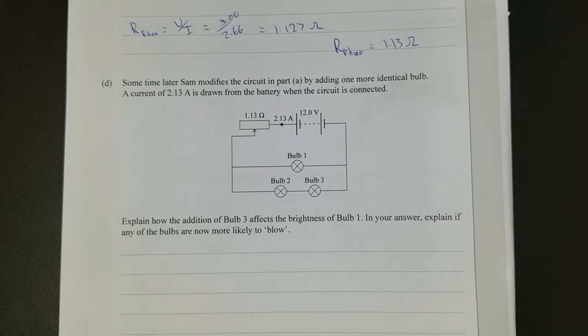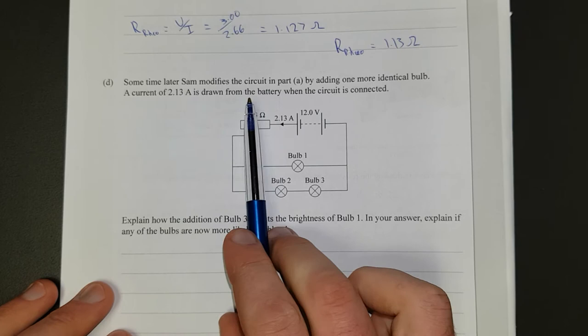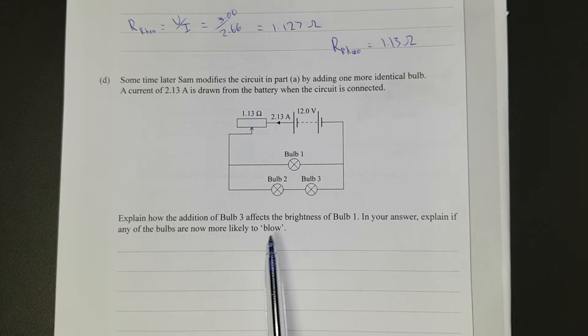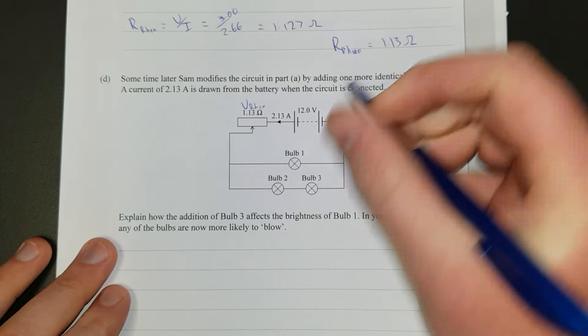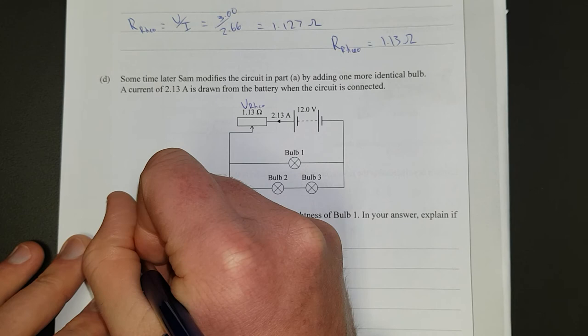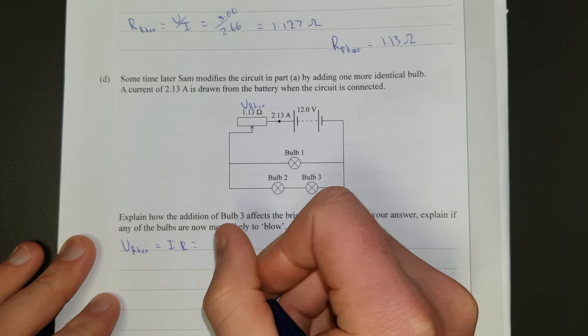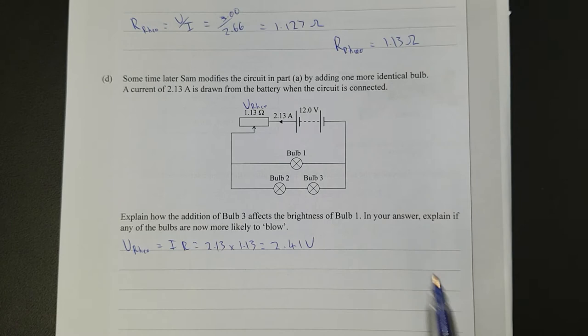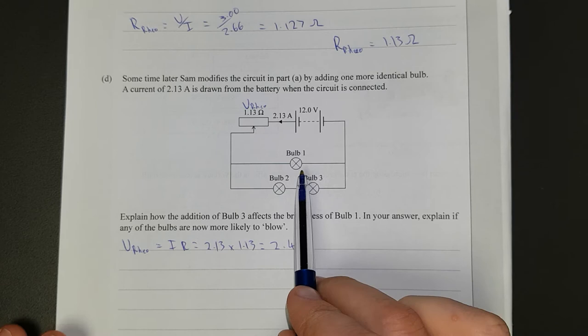At some time later, Sam modifies the circuit in part A by adding one or more identical bulbs. Current of 2.13 amps is drawn from the battery when the circuit is connected. So let's now do that. R-Rio is equal to V-Rio, and that's equal to 2.13 times 1.13, and that equals 2.41 volts. So now the voltage across the rheostat has decreased.